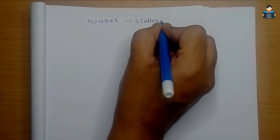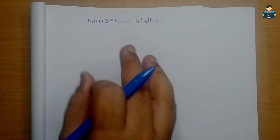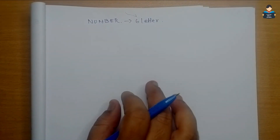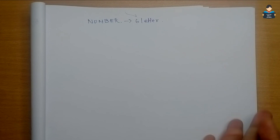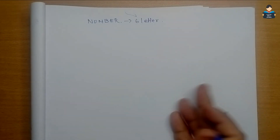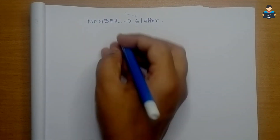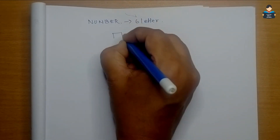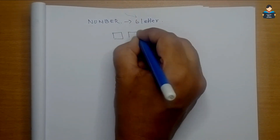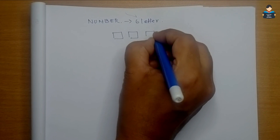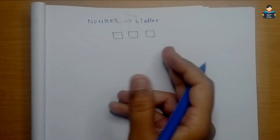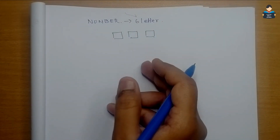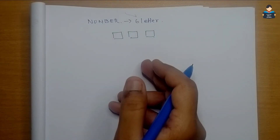Now, take a 6-letter word. We want to form 3-letter words, with or without meaning. This is 3 places to be filled from 6 letters — we need to find how many arrangements can be made.